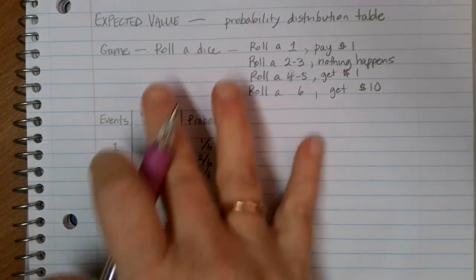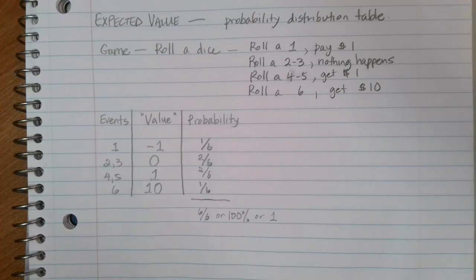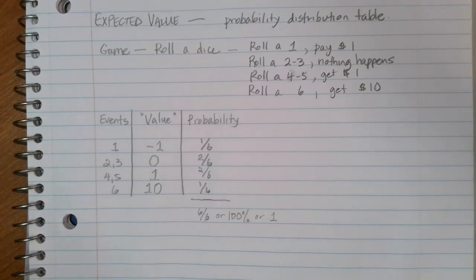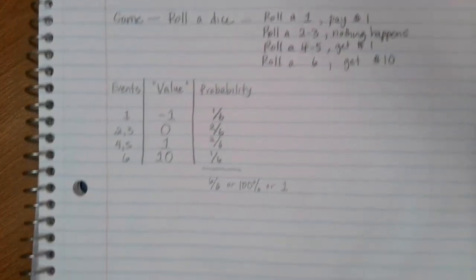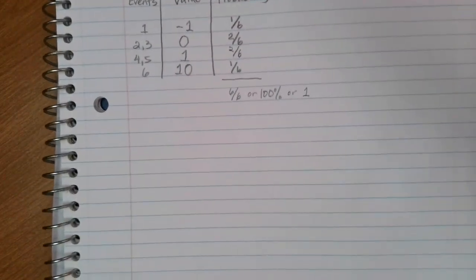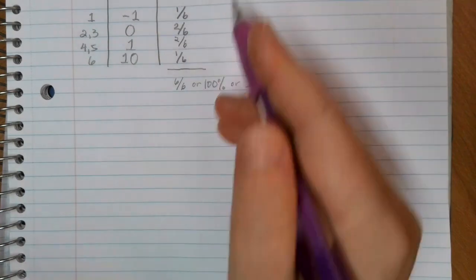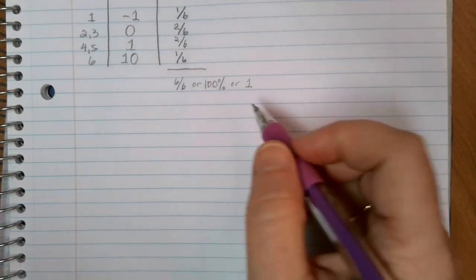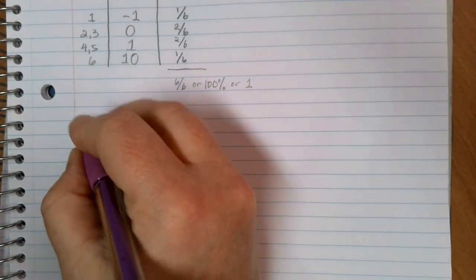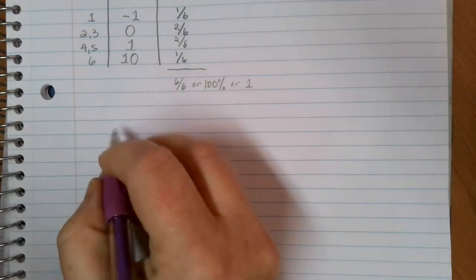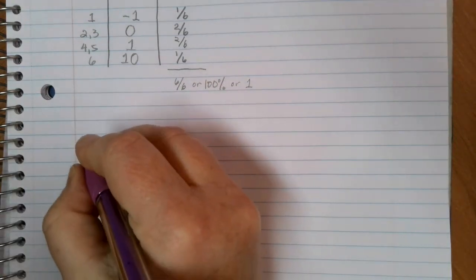So as we look at creating these types of probability distribution tables, this is the kind of thing that we're interested in doing. Another type of situation that we might run into in terms of a probability distribution table, let's say that we have a car insurance company.